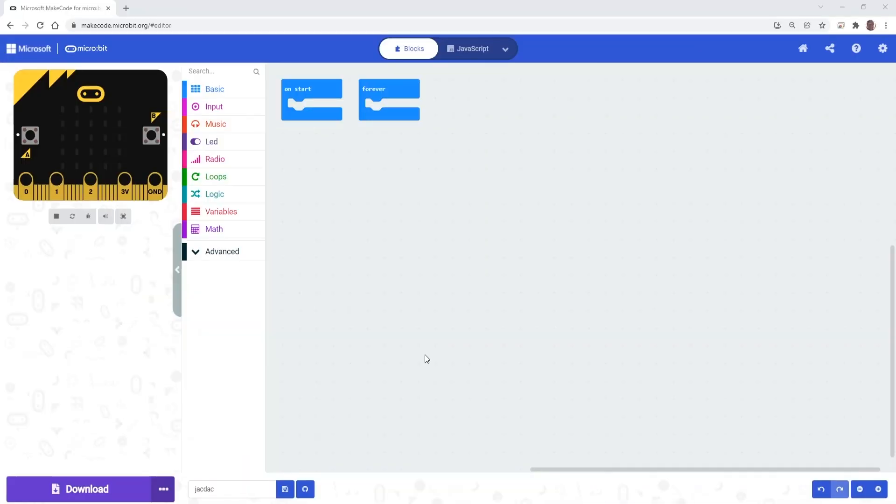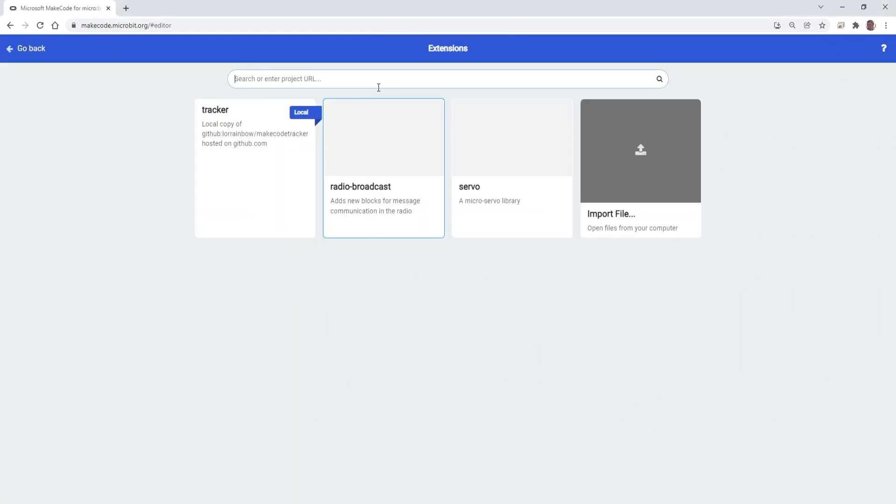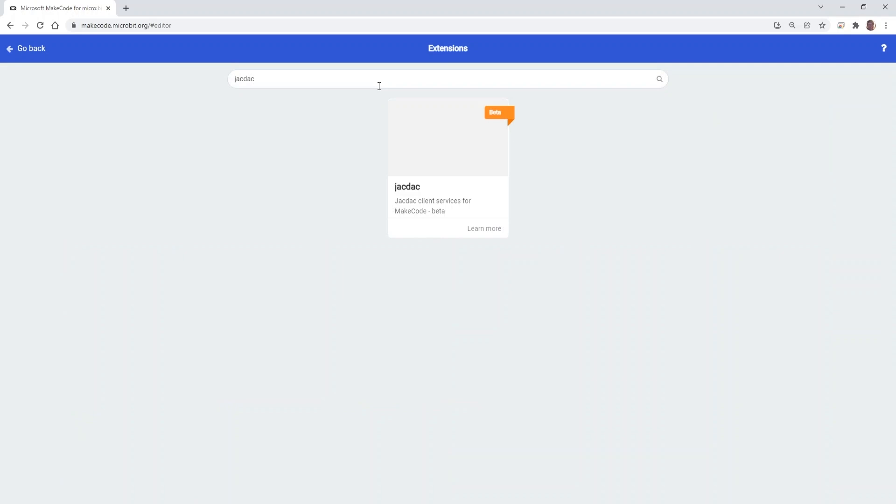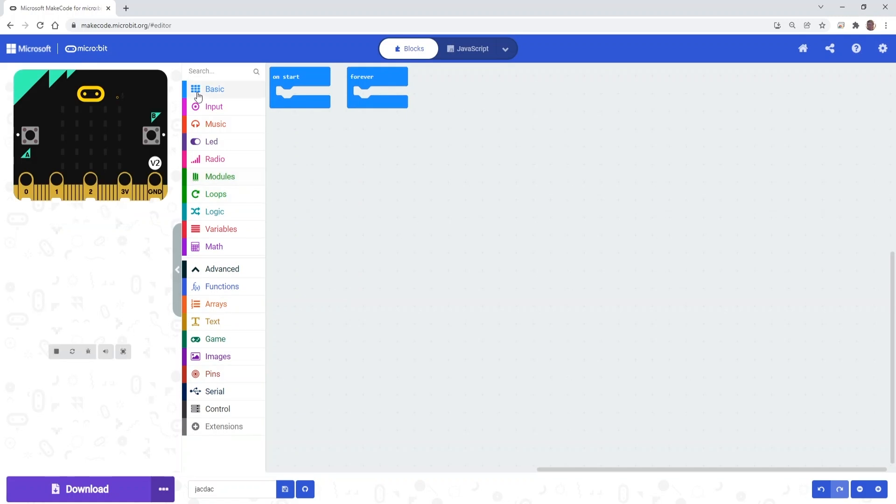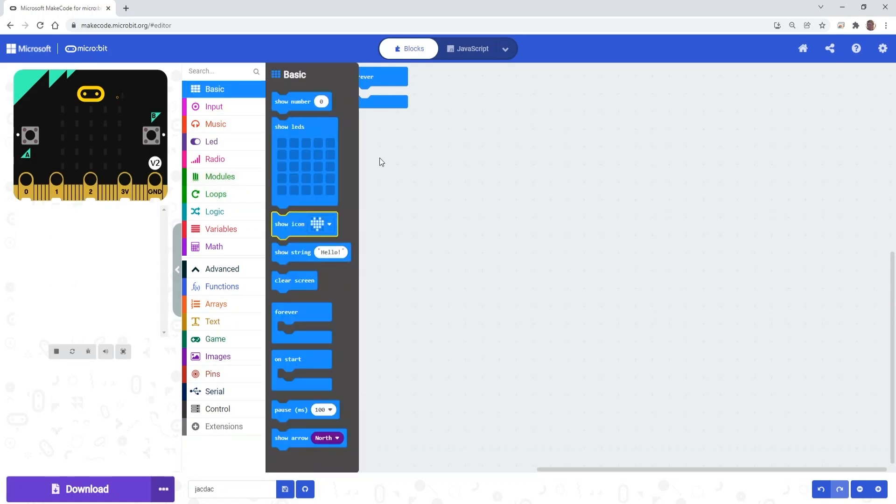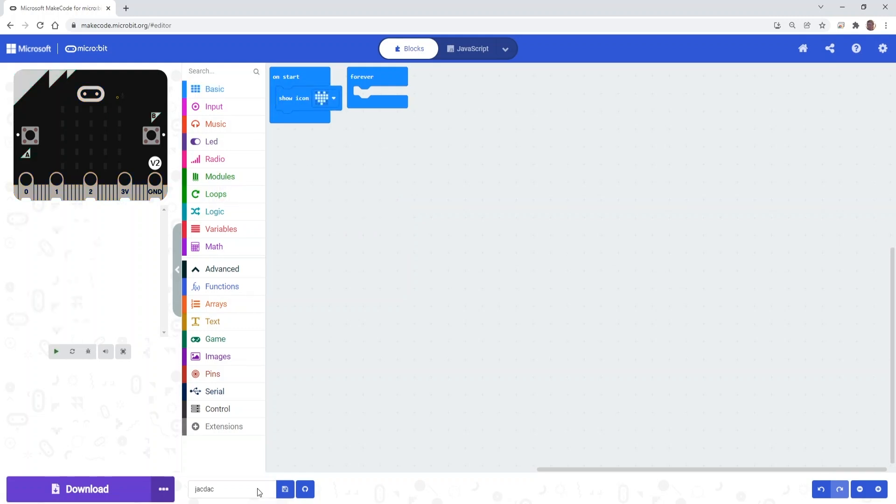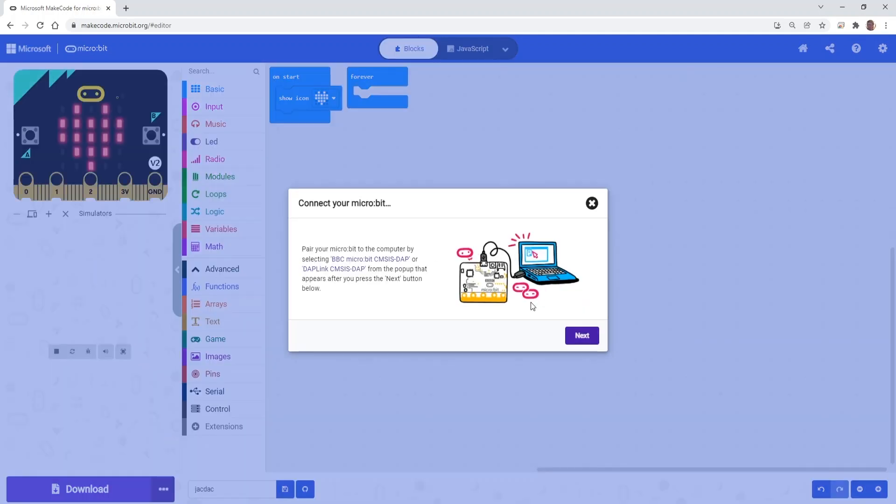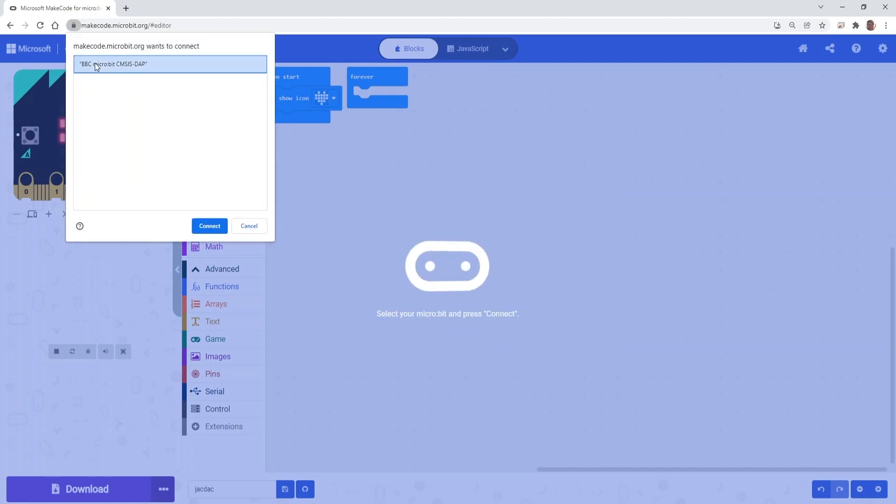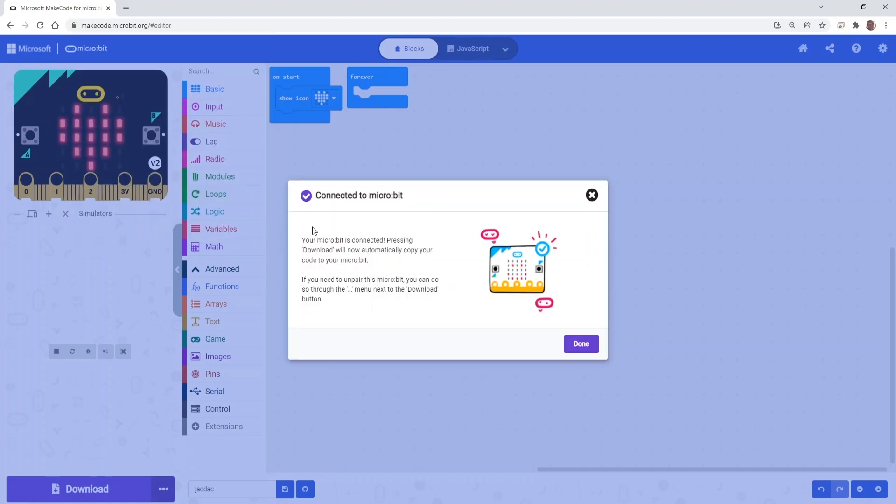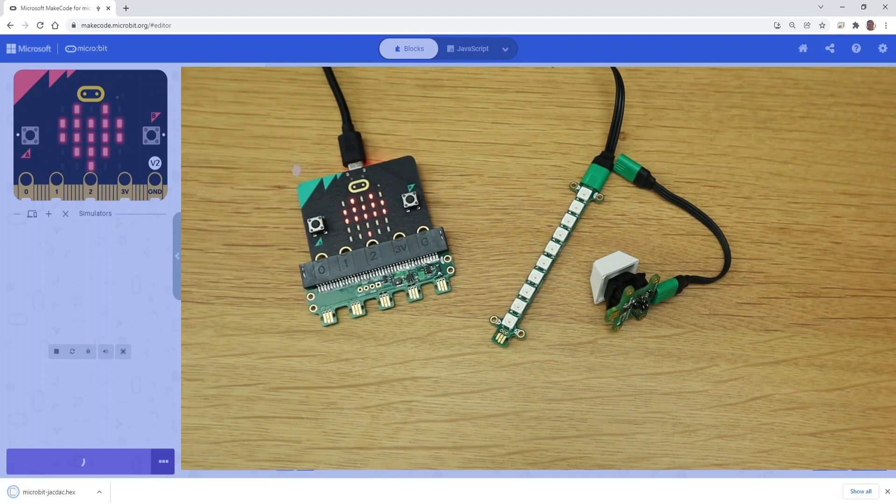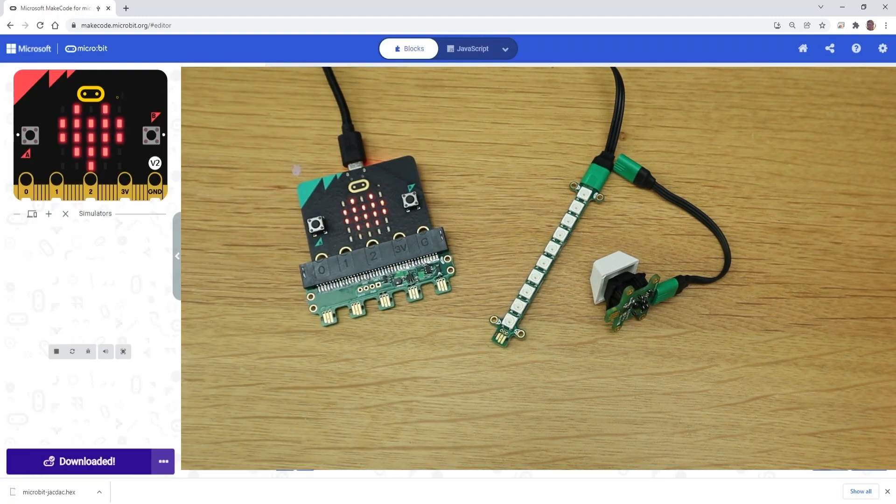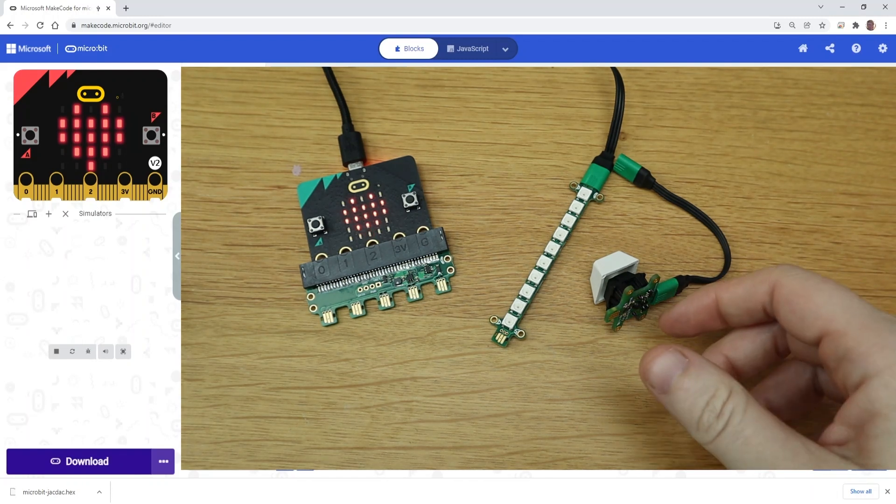So here's the MakeCode website for microbit. We're going to add the Jackdac extension. This is all still beta as of January 2022. We're going to just add a little heart in here and we're going to connect the microbit over WebUSB. So the microbit is connected and then we're going to connect it this way. Now it's to download the Jackdac library and to get the live simulator working, which is really cool.